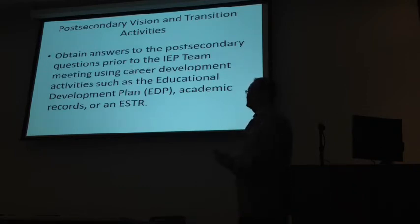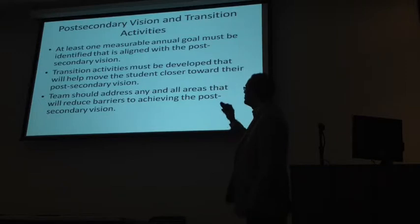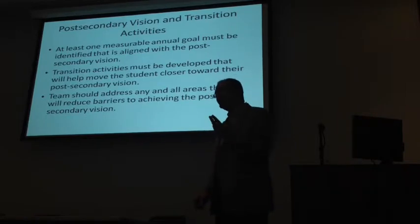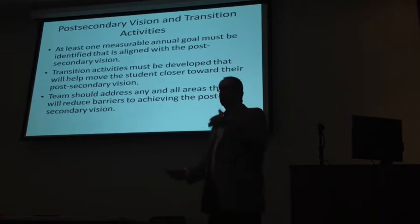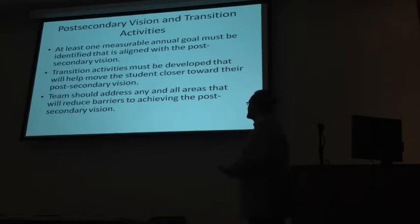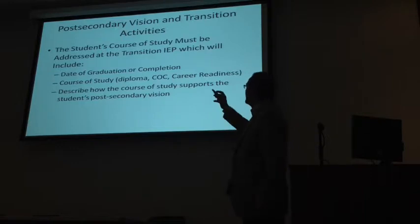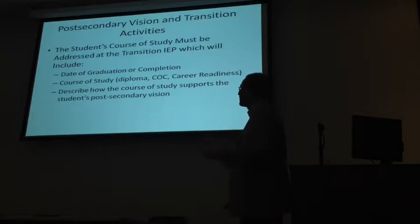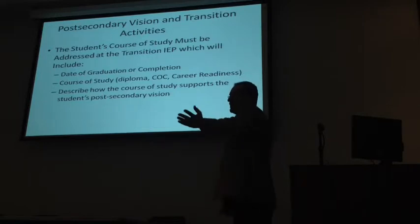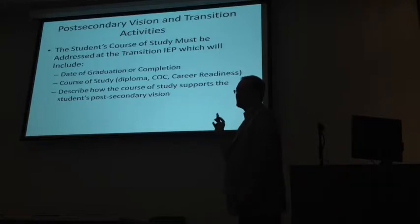Always obtain answers to questions prior to the IEP team meeting and draft everything you possibly can, but you can't predetermine. At least one measurable annual goal must be identified that's aligned with the post-secondary vision — it should always address education and employment, though that will vary greatly depending on the student's course of study. Transition activities must be developed to move the student toward the post-secondary vision, and you should always address all areas that will reduce barriers for the student.